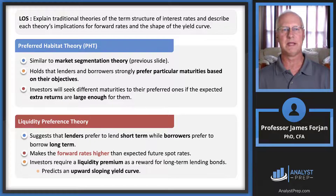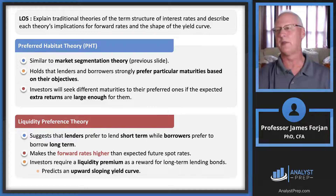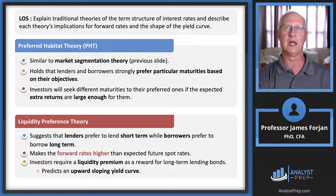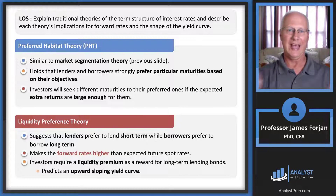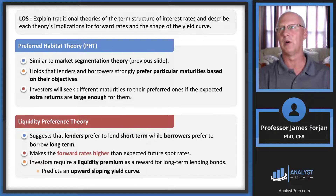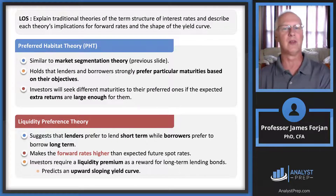Preferred habitat theory is very similar to market segmentation theory. It specifically adds that borrowers and lenders not only prefer a unique maturity segment, but they rarely switch between segments — a short-term borrower would not suddenly seek a 1,000-year loan.